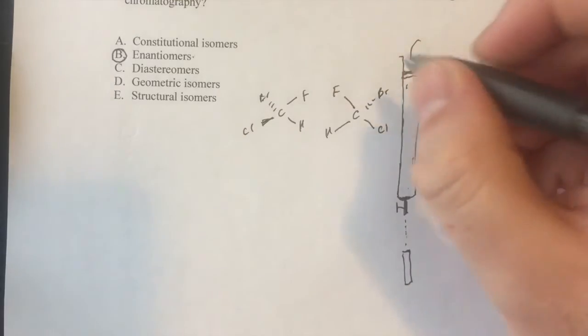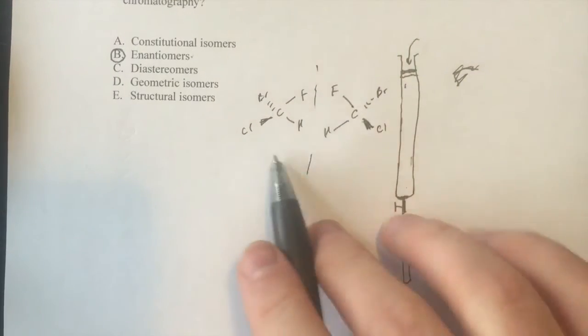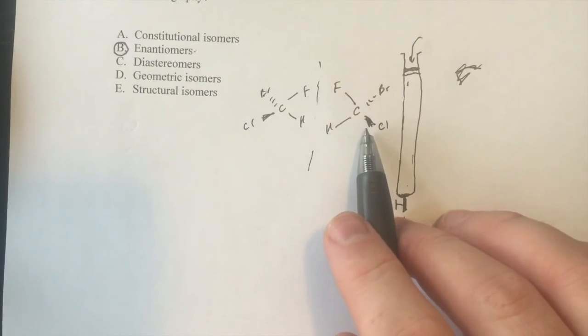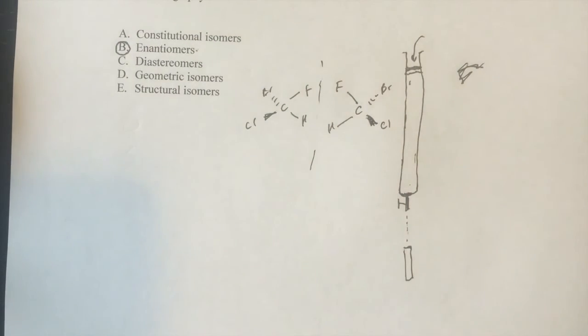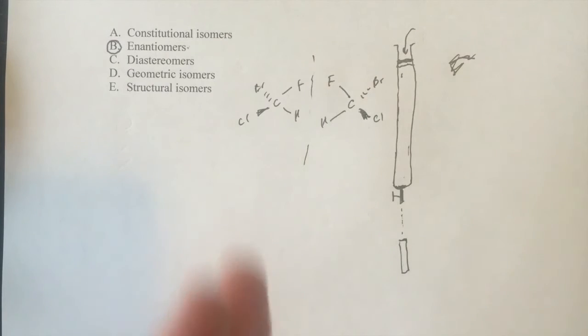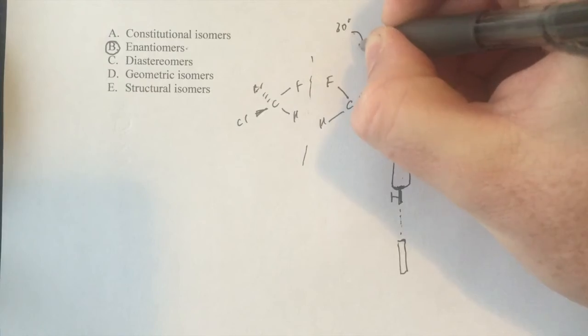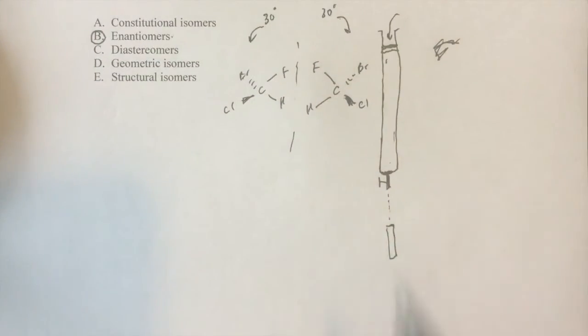If you take this compound, you'll see that the two of them, the only physical parameter where these two compounds are different is the direction in which they rotate plane polarized light. In other words, if you have a polarimeter, and you shine light into this compound, it'll rotate the light, you know, it might be 30 degrees to the right for the one of them, and 30 degrees to the other side.